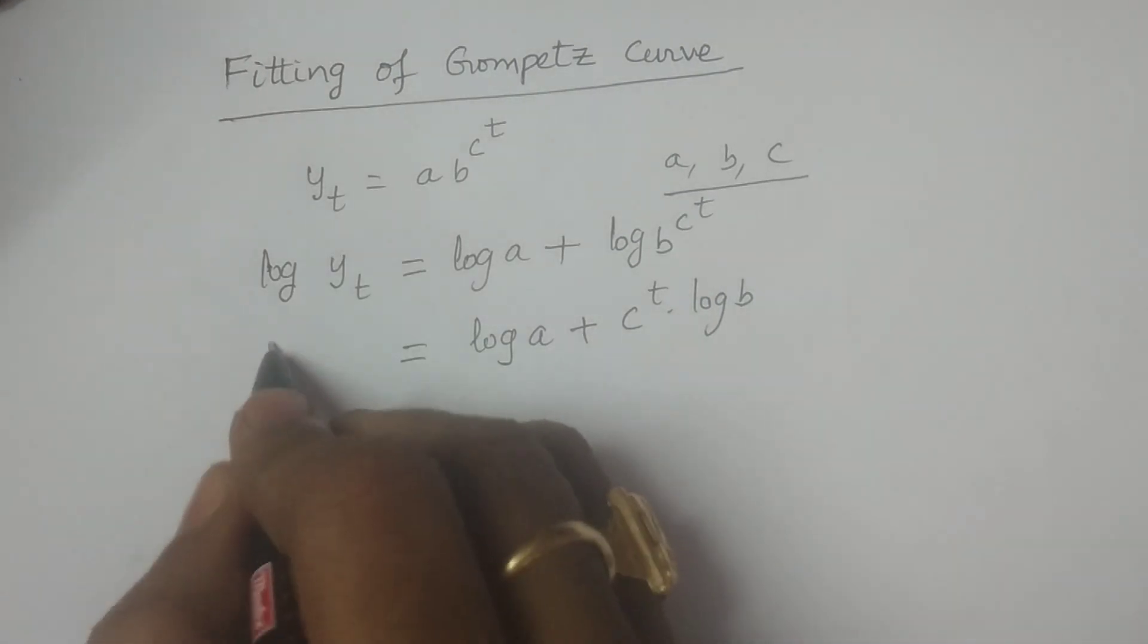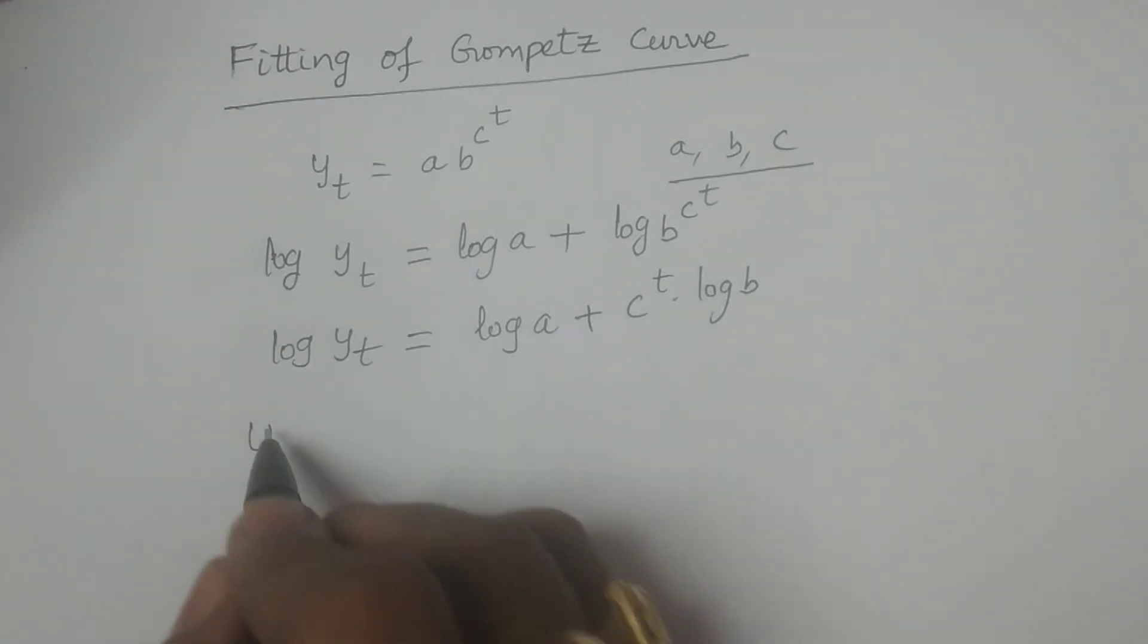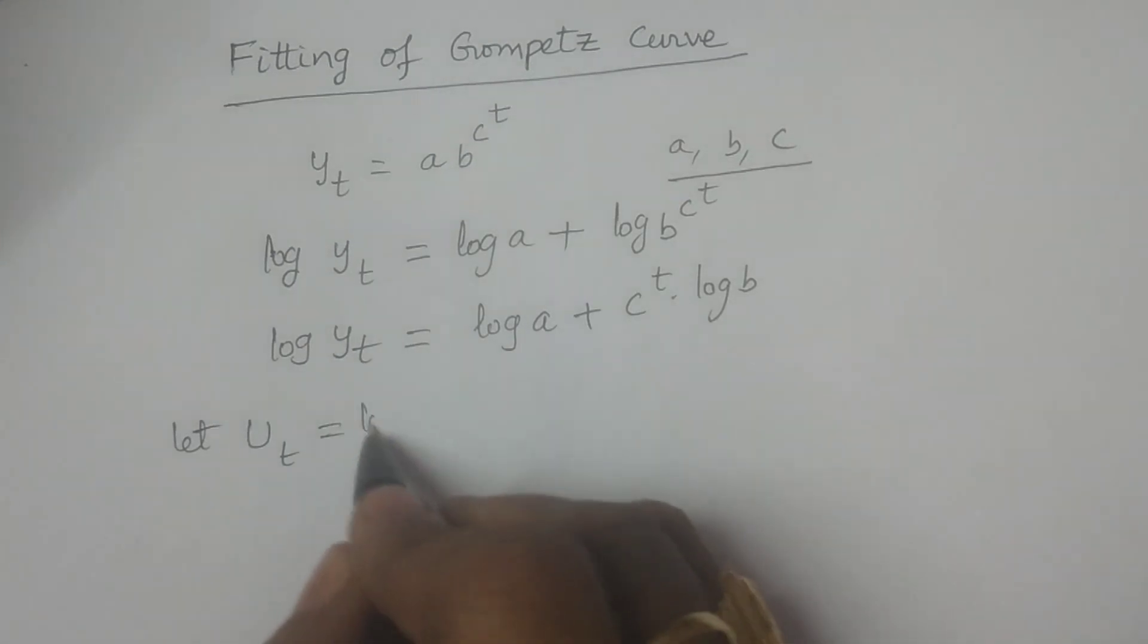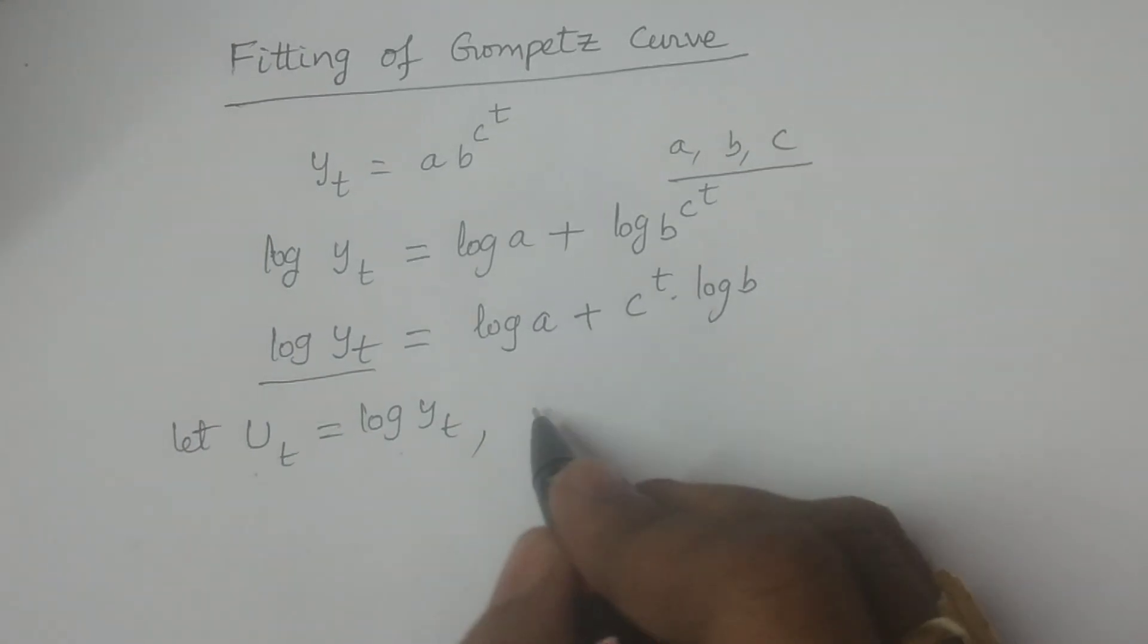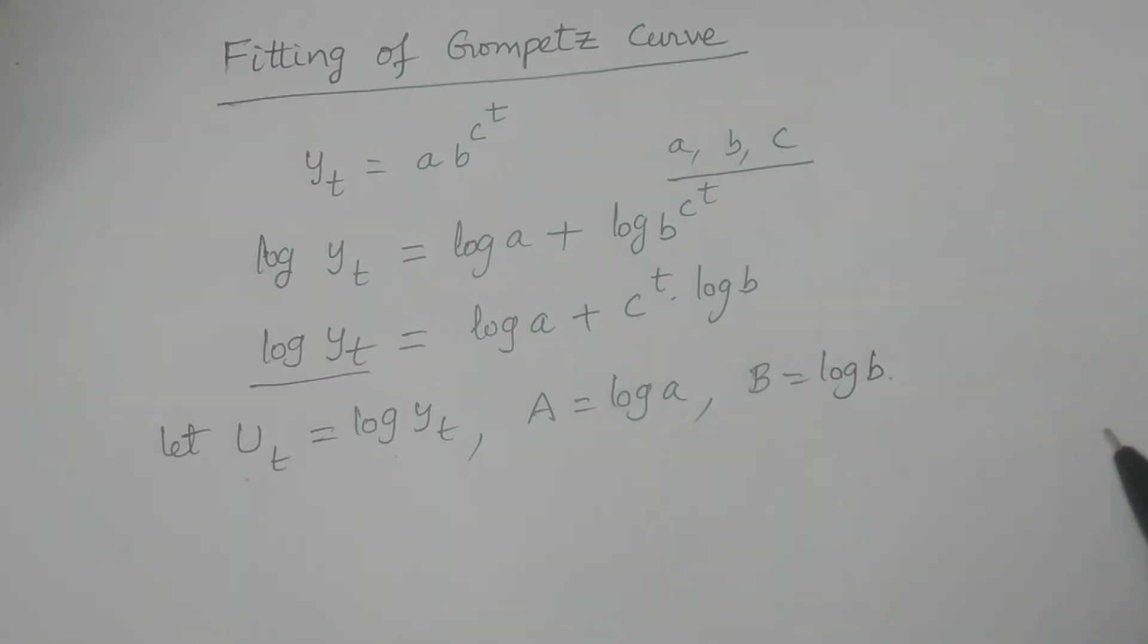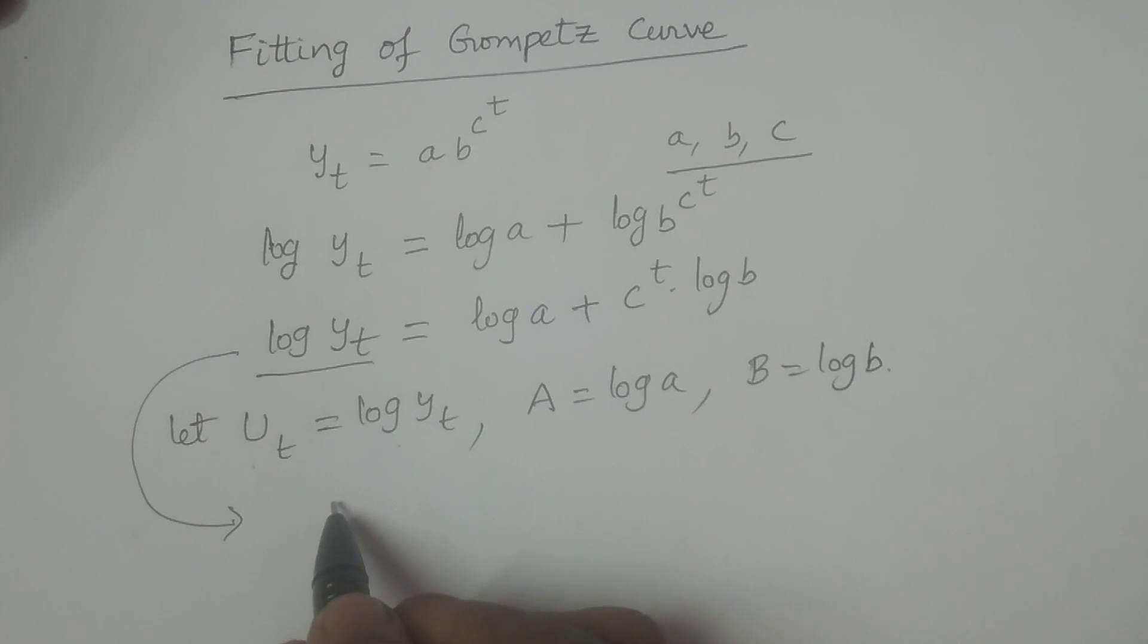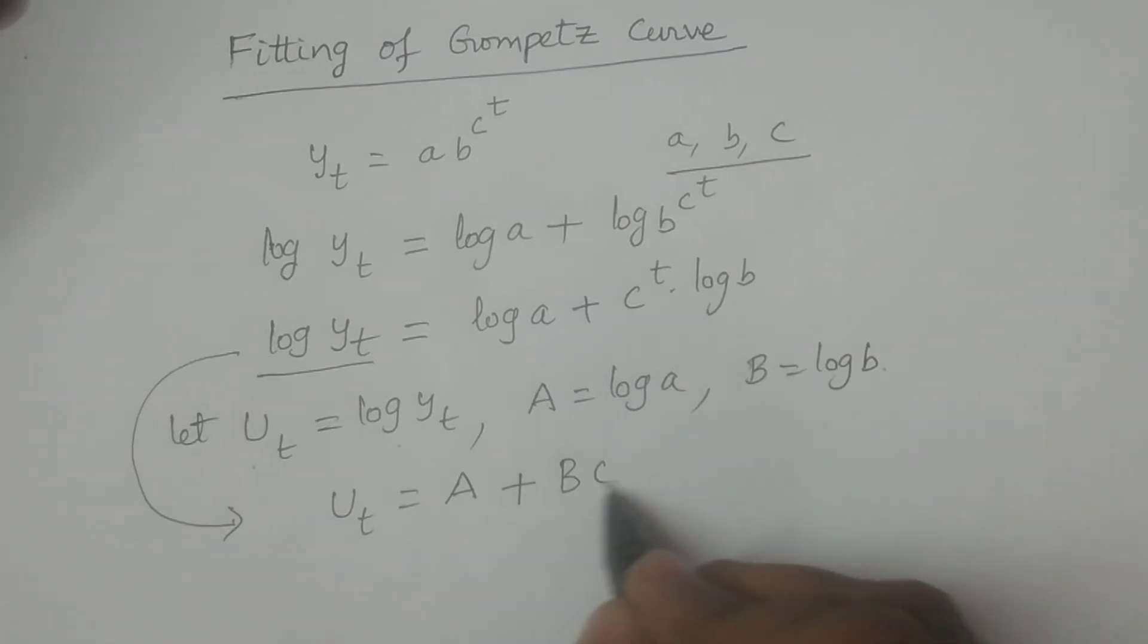Here you consider this is log y_t. Let U_t equal log y_t. I am considering this log y_t as U_t. And capital A equals log a, and capital B equals log b. So log y_t equals capital A plus capital B into c^t.